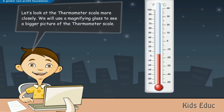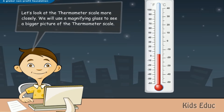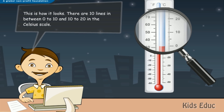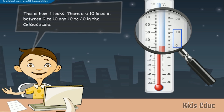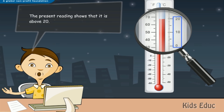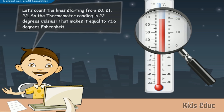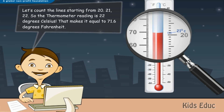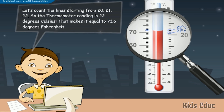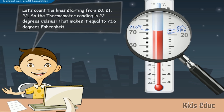Let's look at the thermometer scale more closely. We will use a magnifying glass to see a bigger picture of the thermometer scale. This is how it looks. There are 10 lines between 0 to 10 and 10 to 20 in the Celsius scale. The present reading shows that it is above 20. Let's count the lines starting from 20: 21, 22. So the thermometer reading is 22 degrees Celsius, that makes it equal to 71.6 degrees Fahrenheit.